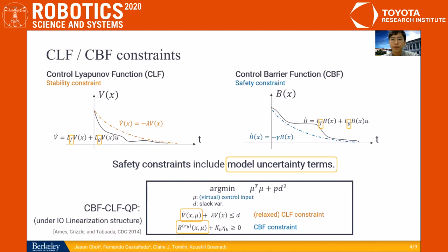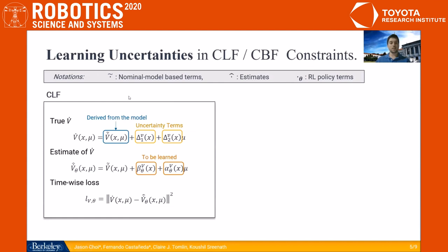We can actually express the true V dot as a sum of a model-derived term expressed with a tilde, and this control affine term with uncertainties delta 1 and delta 2. Our objective is to build an estimator V dot hat by learning the functions alpha theta and beta theta. For that purpose, we will use this least squares loss. And by minimizing it, we will make the estimate of V dot close to the true value of the derivative.